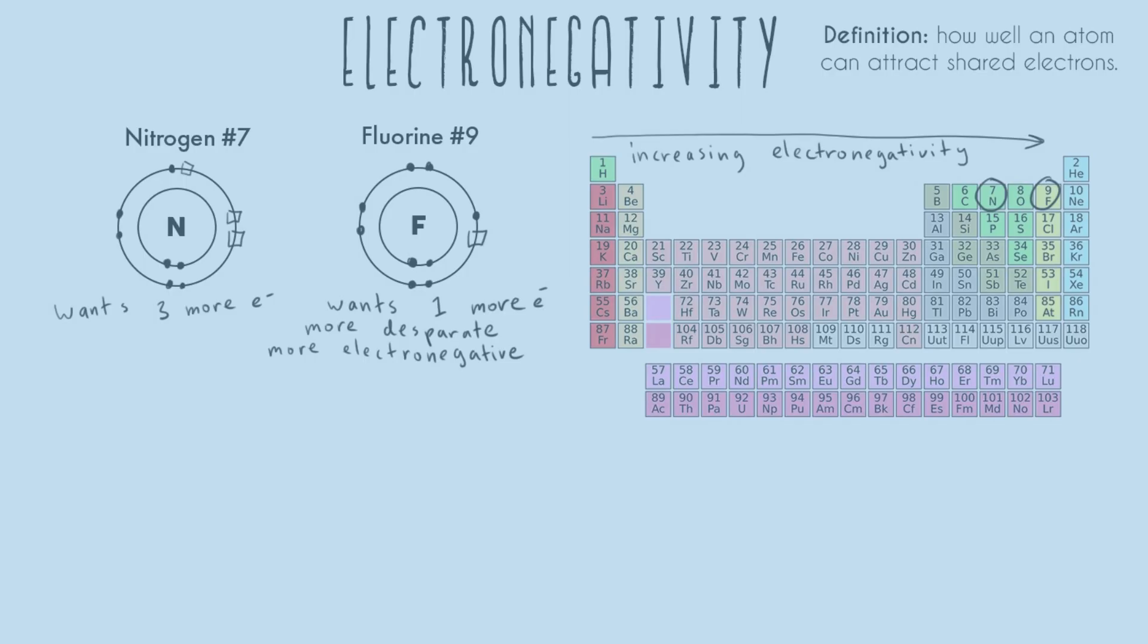And that's true for the entire periodic table, except the very last column on the right-hand side, the noble gases. And so these atoms don't really form bonds with any other atoms. There's some very rare exceptions. For the most part, the noble gases don't form bonds.